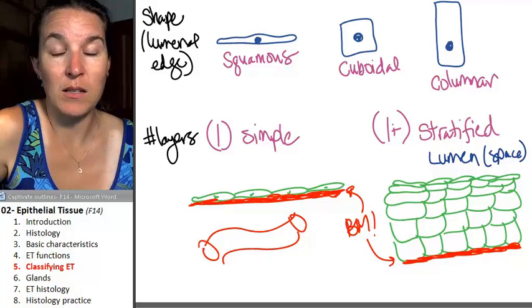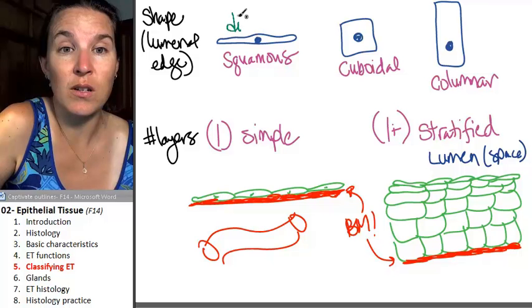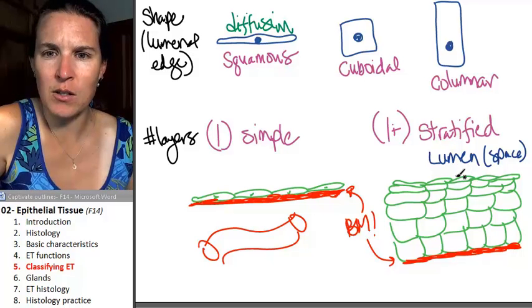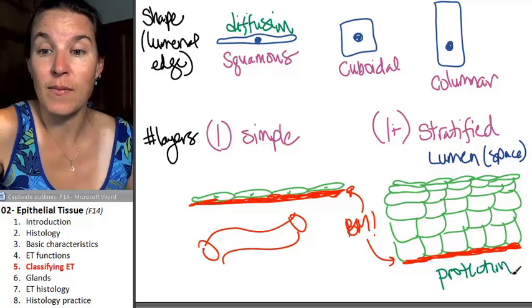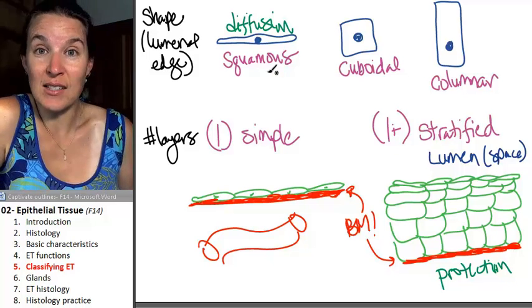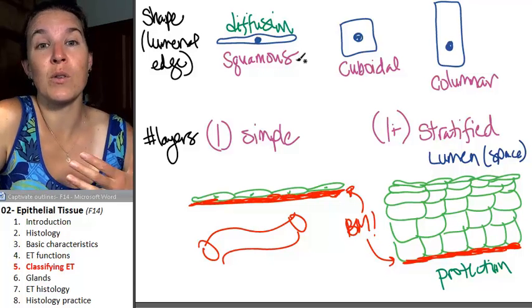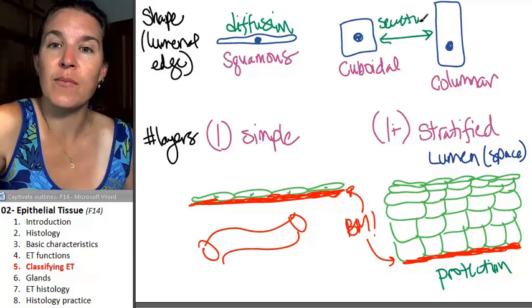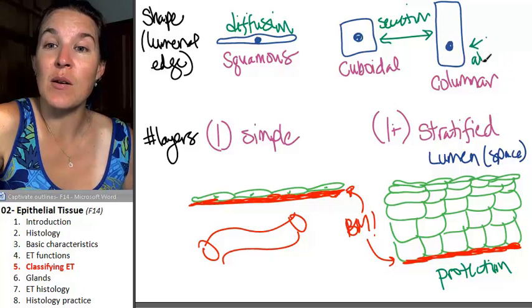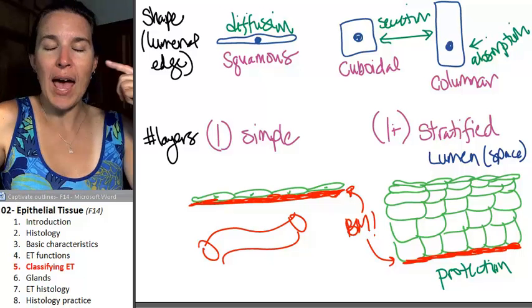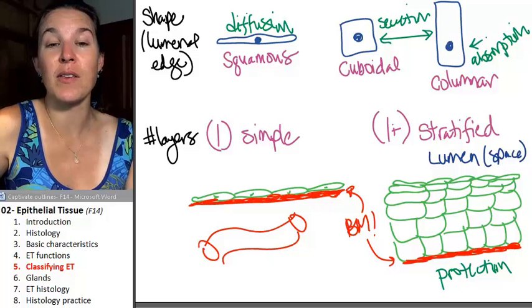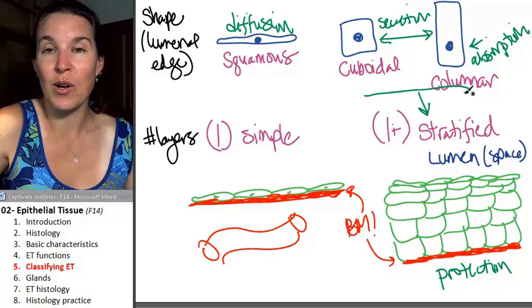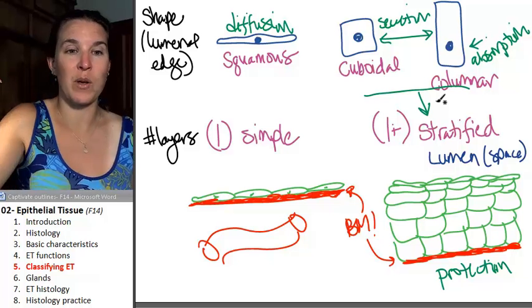Ready? Simple squamous. That guy is all about diffusion. Stratified squamous is all about protection. Diffusion of gases, of nutrients. They're super thin, so stuff goes in and out really easily. Cuboidal and columnar play a role in secretion, and columnar is excellent at absorption. Now, as we go through our systems and you see these different kinds of epithelium, I want you to be thinking, why is it like that? We are not going to see stratified cuboidal or stratified columnar tissues. So we are not even going to talk about where we might see them or what they might do.